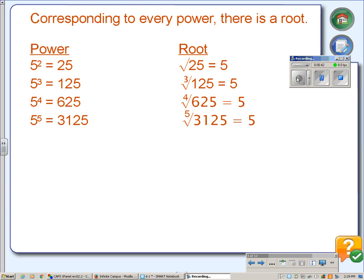So every corresponding power or every corresponding exponent has a corresponding root. So 5 squared is 25, so the square root of 25 is 5. 5 cubed is 125, so the cube root of 125 is 5, and so on.